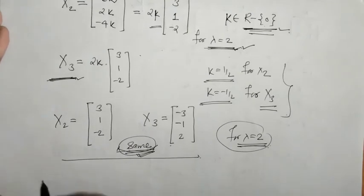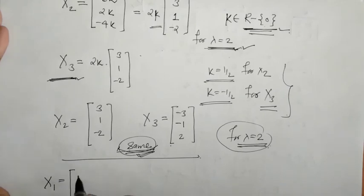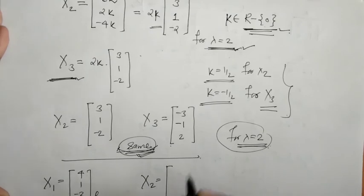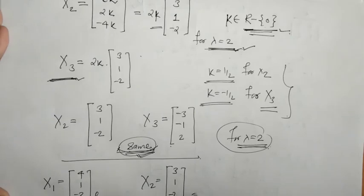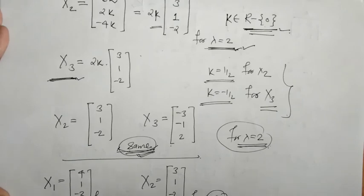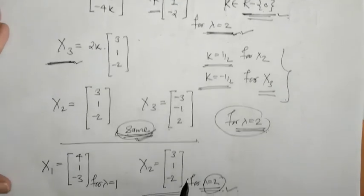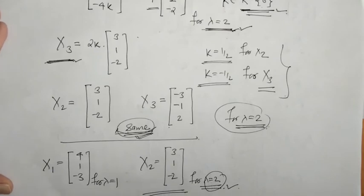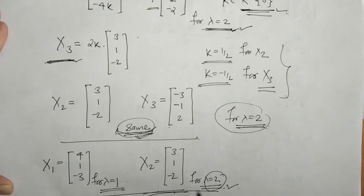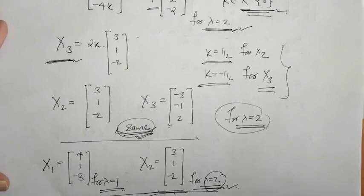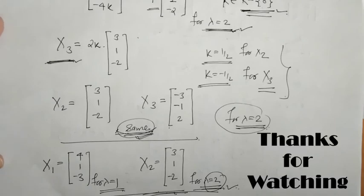So we have found two linearly independent eigenvectors: the first eigenvector for λ = 1, and the second eigenvector for λ = 2. For this repeated eigenvalue, we got only one eigenvector. When finding eigenvectors, we must ensure they are linearly independent. That's it for now — see you in the next video. Thank you, keep watching.